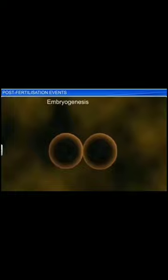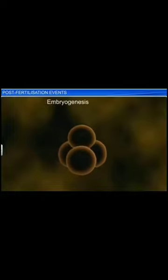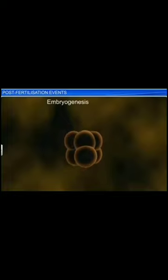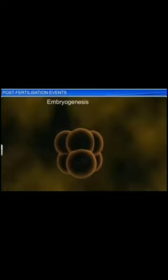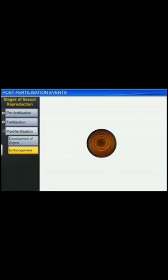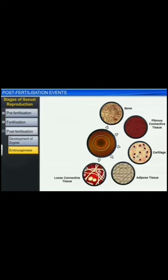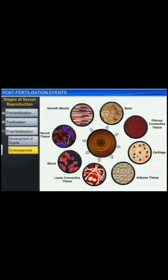After the initial development, the zygote slowly starts metamorphosing into an embryo through a process known as embryogenesis. During this process, the zygote starts to divide mitotically, which results in an increase in the number of cells. Simultaneously, the zygote also undergoes cell differentiation — a process during which groups of cells go through modification to form different tissues and organs.